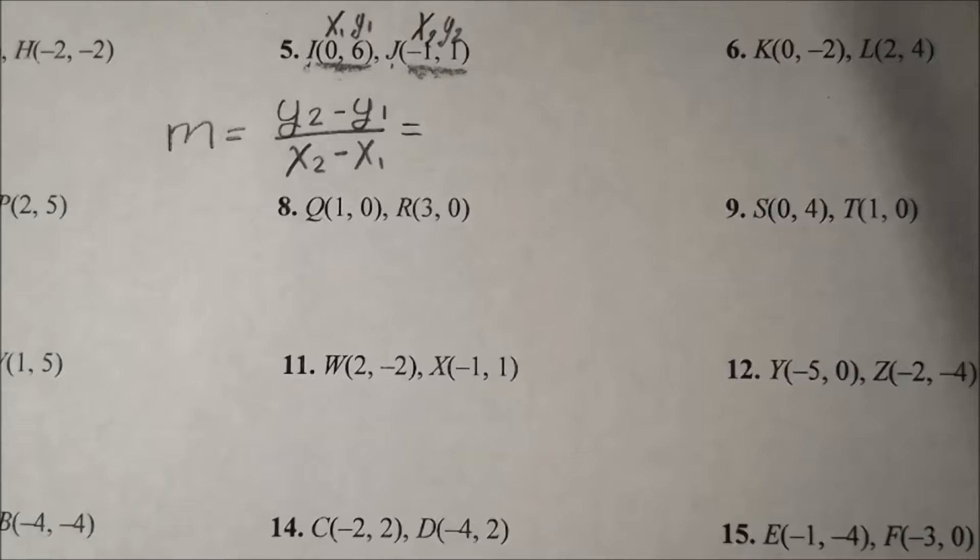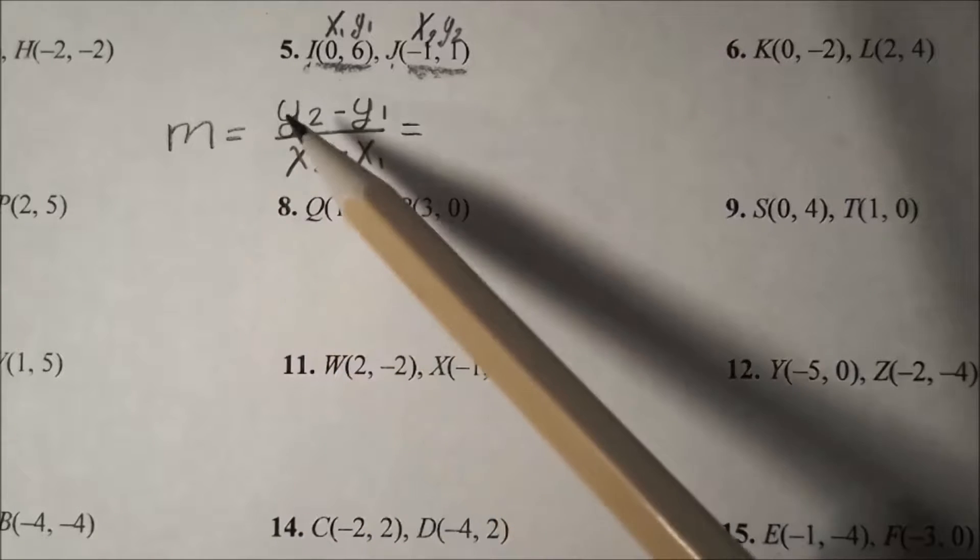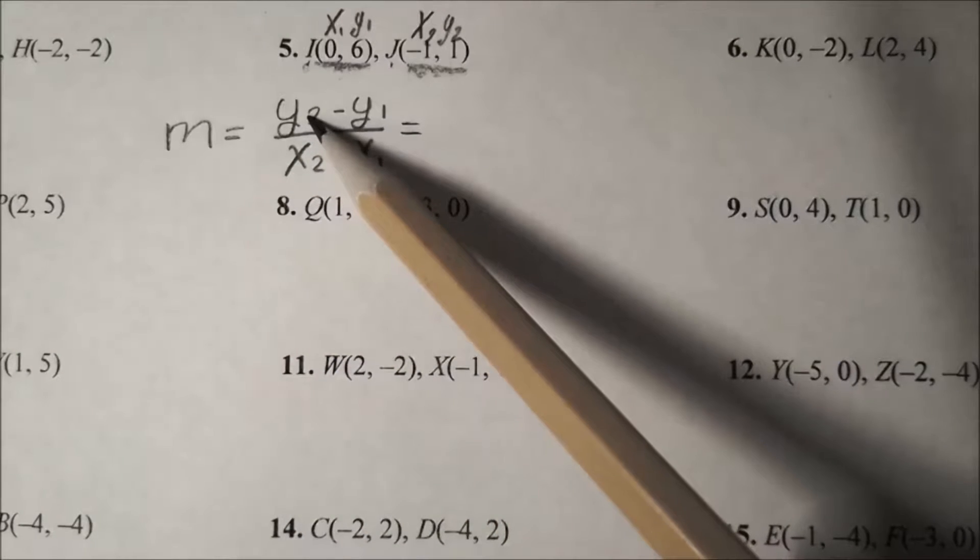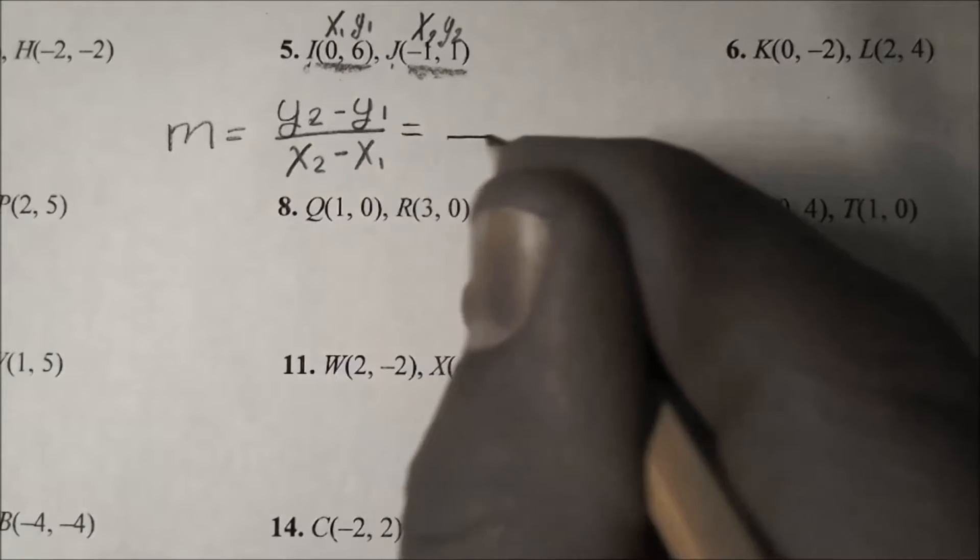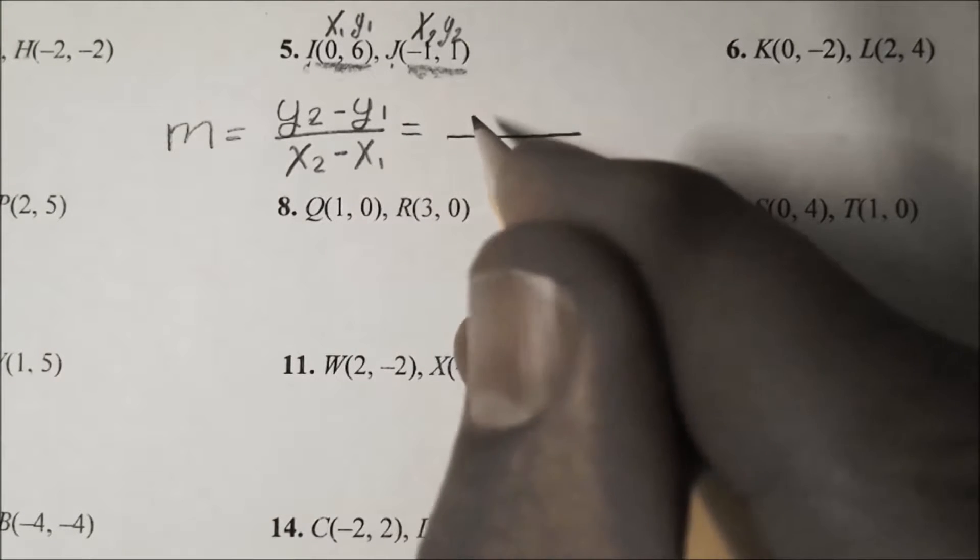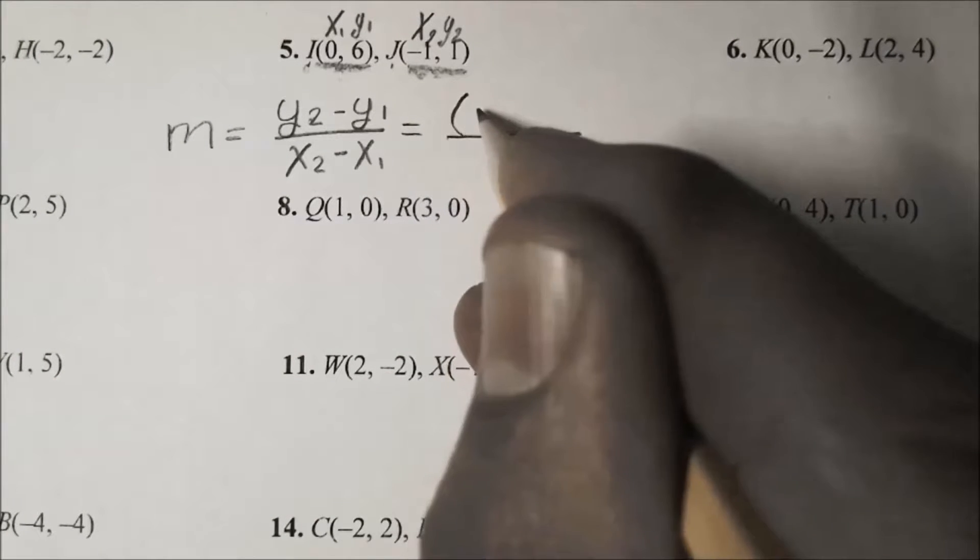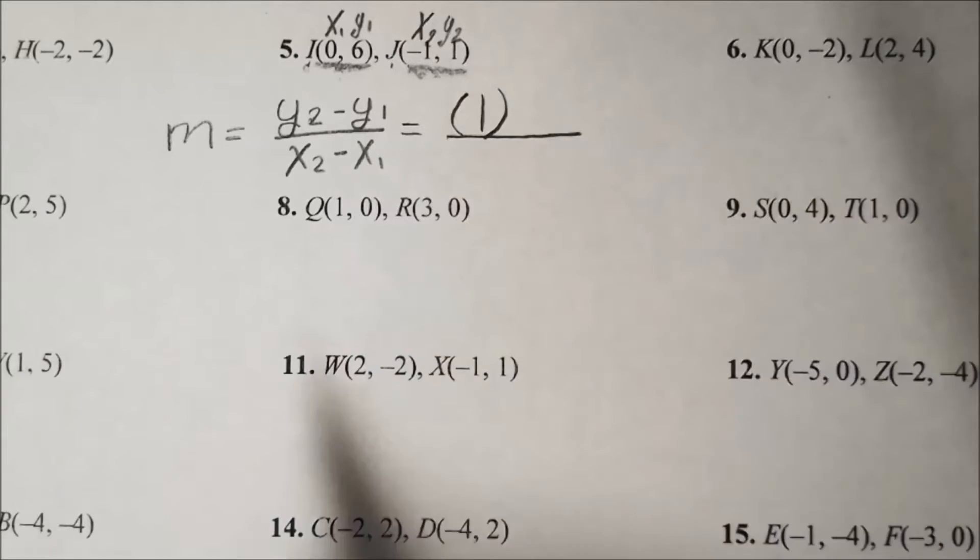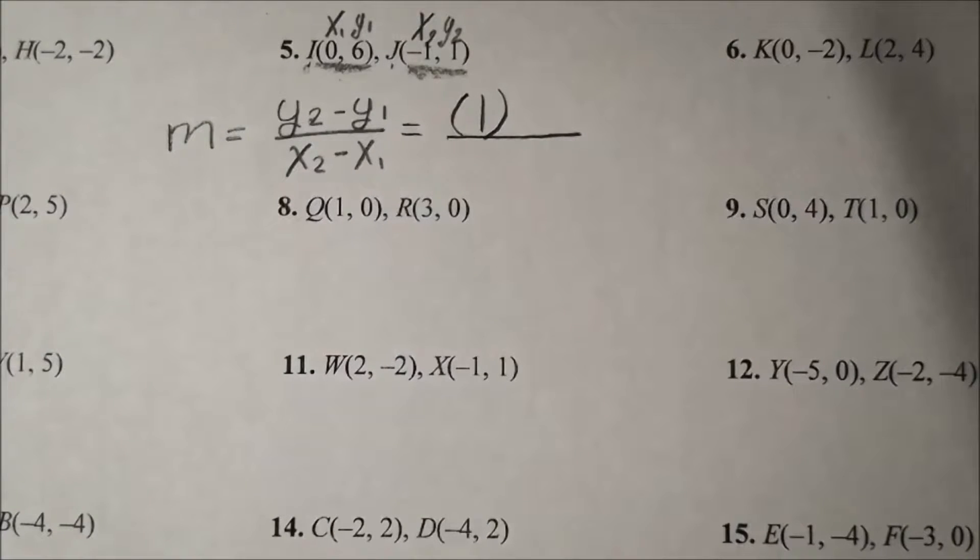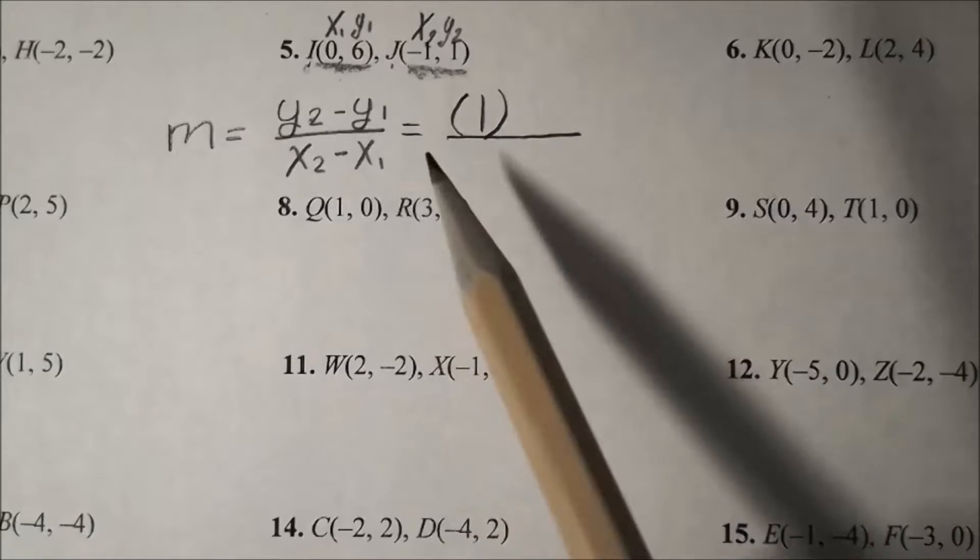The formula says the first thing we write is y₂. If I go back up here to my y₂, that value is one, so I'm going to fill it in. I'm going to put one and put parentheses around it. It's up to you whether you want to put parentheses.